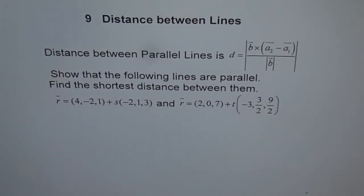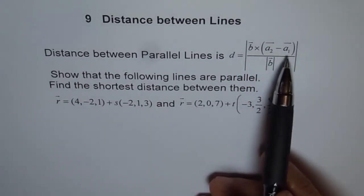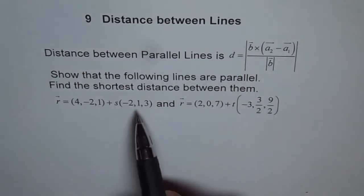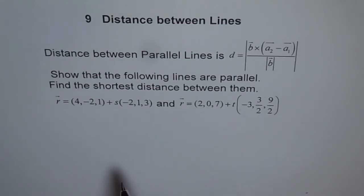Distance between lines. Lines could be parallel lines or lines could be in different planes. Those are the lines in which we are trying to find distance. So, if the lines are parallel, then the formula for distance is b cross (a2 minus a1), where b is the vector direction for the line, which is going to be the same for parallel lines.